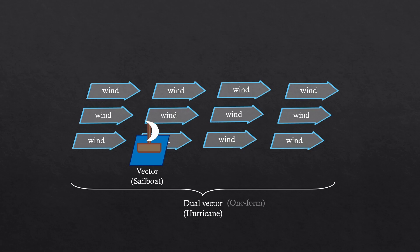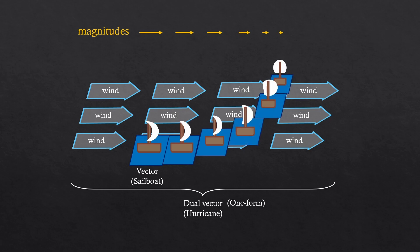By the way, dual vector actually is called one form. Many physicists prefer the name one form, or at least I do. Now, how could this energy change? It should decrease as the boat gets misaligned with the one form. It's a pretty obvious thing, right?